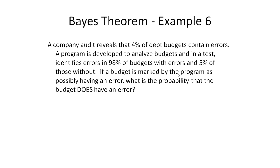We say a budget was marked by the program as having an error. What's the probability it actually does have an error? A lot of people might want to jump and say 98%, but remember that's when there is an error and that's probably identified, but there might not have been an error.